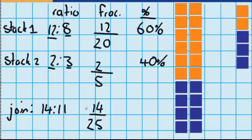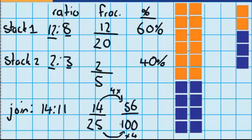Now I just need to convert this into a percentage. I can do that by bringing the denominator up to a hundred, because a percentage is out of a hundred. I can do that by making twenty-five four times bigger. But to keep the fraction the same, I also have to make the numerator four times bigger, and four times fourteen is fifty-six. So fifty-six out of a hundred is equivalent to fourteen twenty-fifths, and the answer is fifty-six percent.